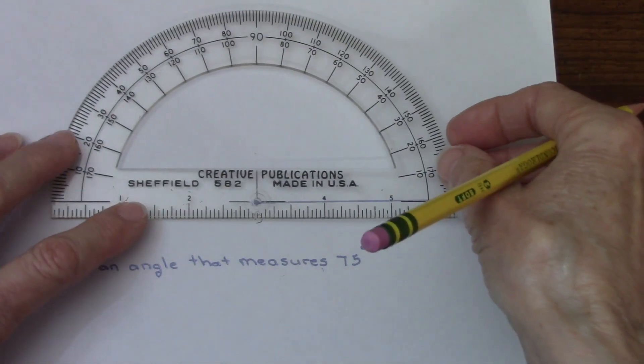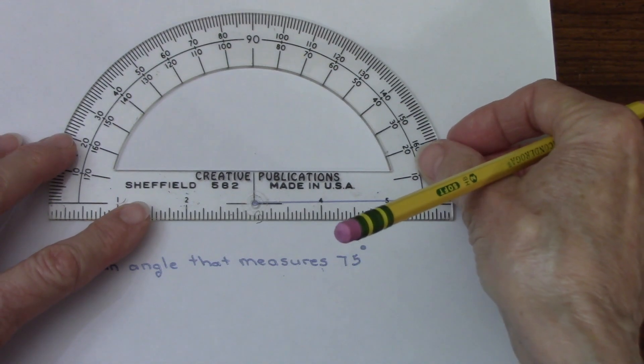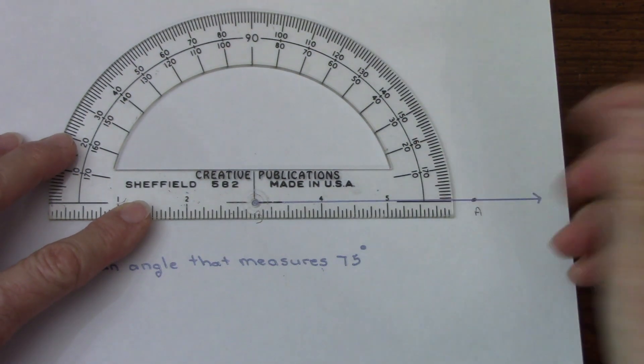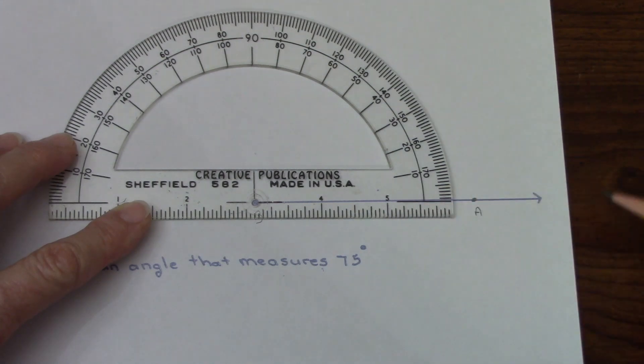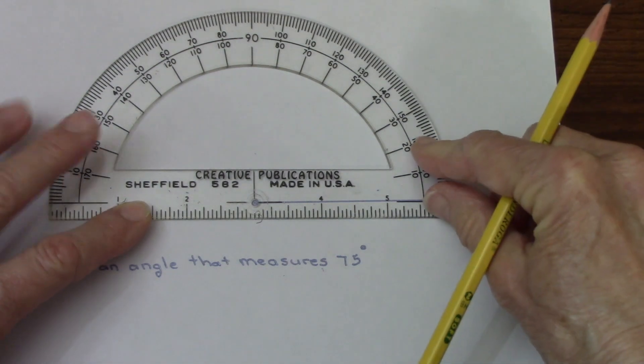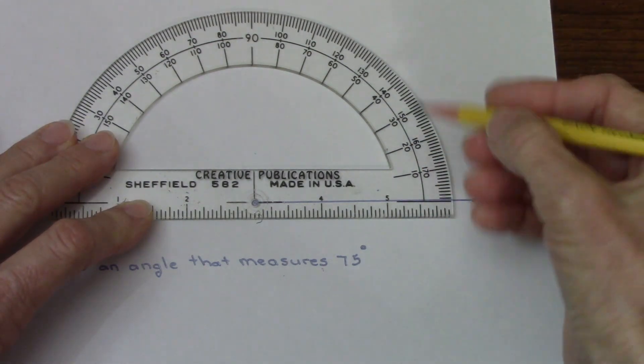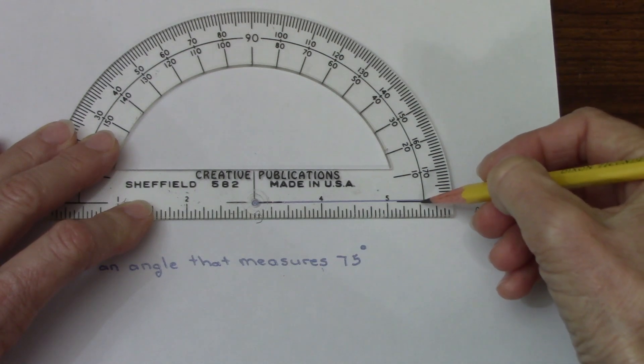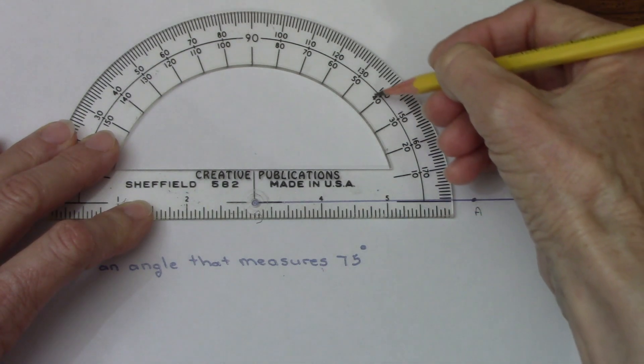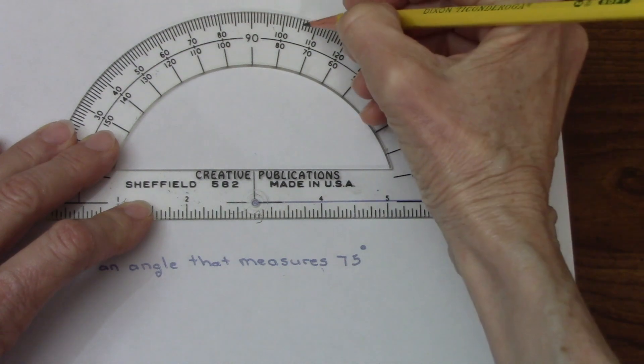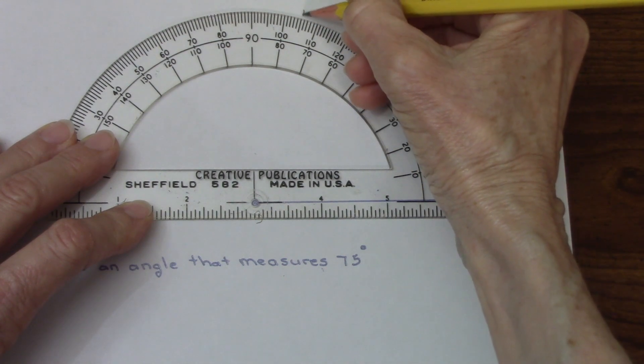I'm going to put the circle right on top of B, right there at the center, line this up so it's straight along this bottom ray. Since I'm looking for seventy five degrees, I'm going to start here at zero, ten, and keep going to get to seventy. And here's the seventy five, and I'm just going to make a little mark.